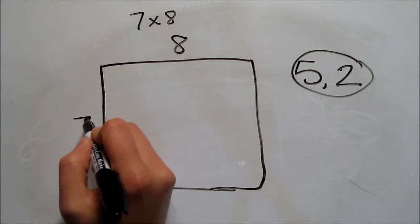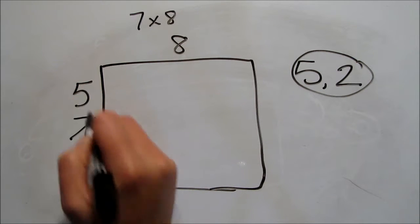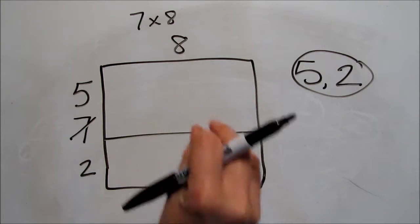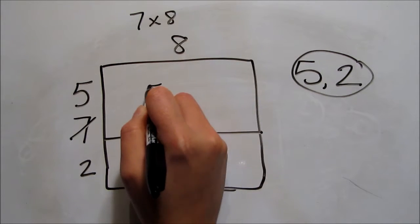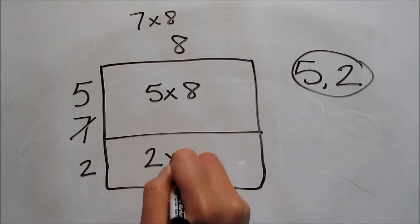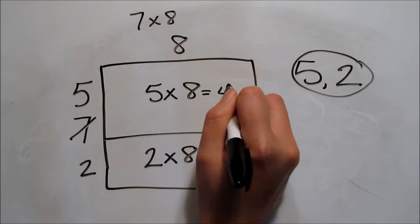We've made two smaller arrays. Put together, they're the same size as the original array, but the smaller numbers are easier to work with. So, this array is 5 times 8, and this array is 2 times 8. So, let's start with 5 times 8, which is 40.